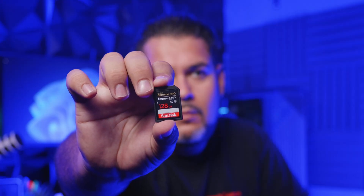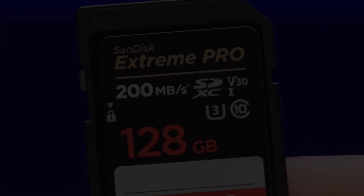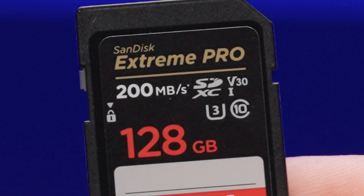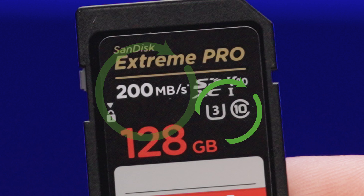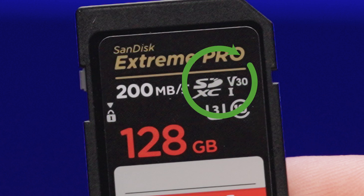Here's a typical SD card label. You'll usually see a few pieces of information like storage capacity, the speed class, and sometimes additional performance ratings that we'll talk about in a little bit.